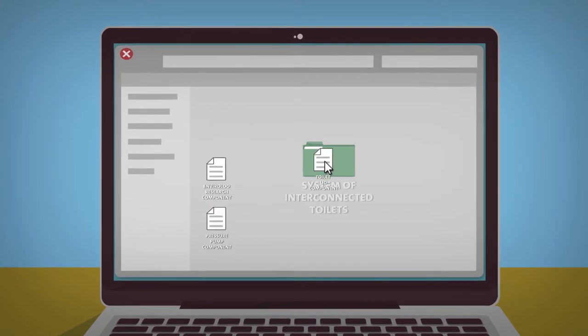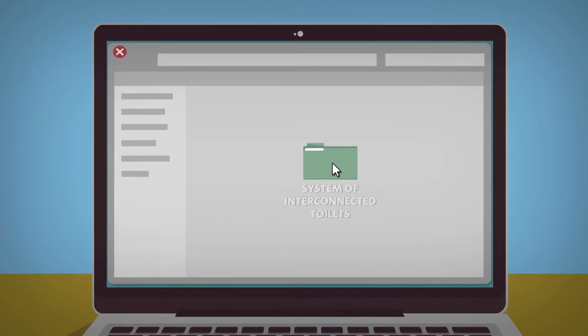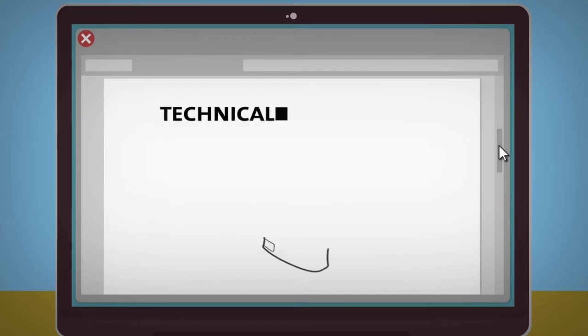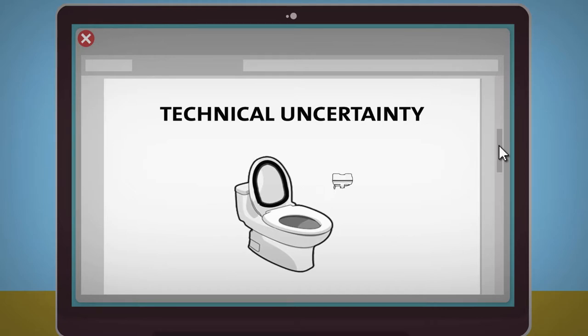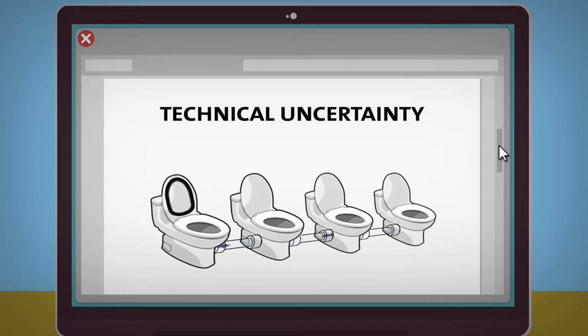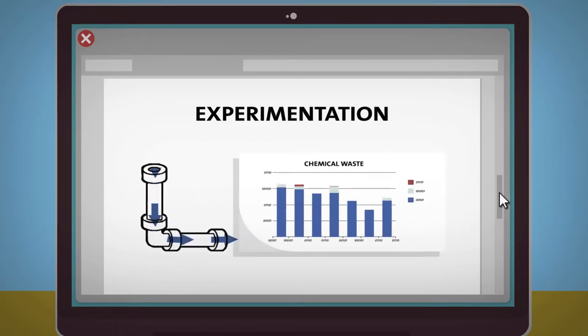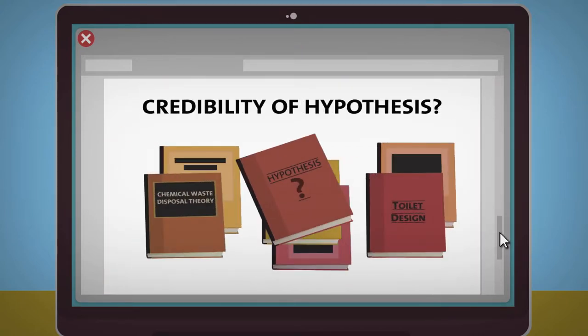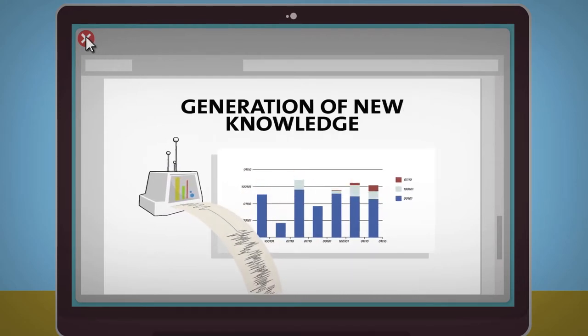EnviroLoo considered AusIndustry's guidance products and determined that the testing of 10 interconnected toilets with a redesigned toilet lid and a pressure unit meets the criteria for a core R&D activity because there was technical uncertainty that needed to be addressed by the hypothesis that a modified toilet lid, combined with a small pressure system, would provide the requisite suction in a system of interconnected toilets. The hypothesis was tested in a set of experiments. Conditions were varied and the degree of evacuation of the chemical waste was measured. It could not have been known or determined in advance whether this hypothesis would work. It was conducted for the purpose of generating new knowledge.